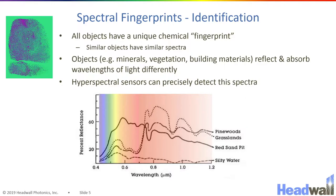This is just a depiction of what a spectroscopist would see when looking at the spectral shape of these different objects — just another way of showing that these objects have very distinct spectral shapes that can be used to differentiate them from each other.